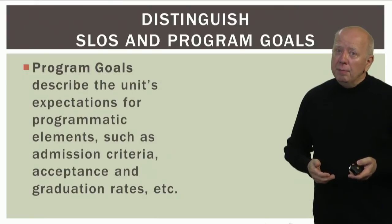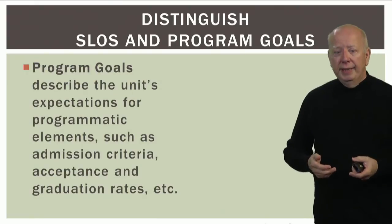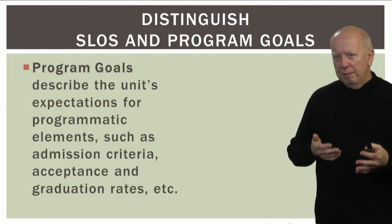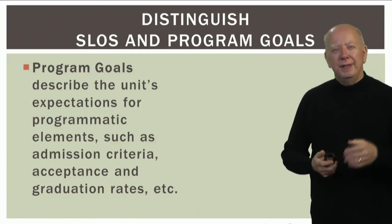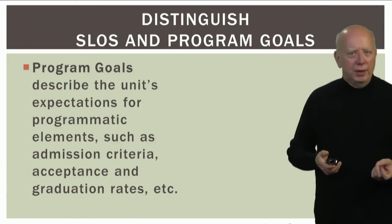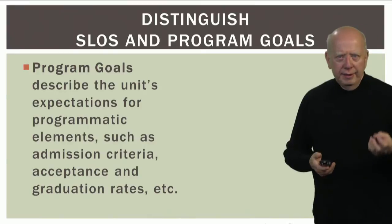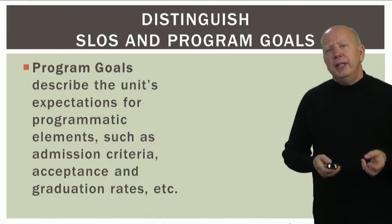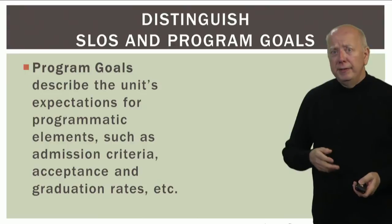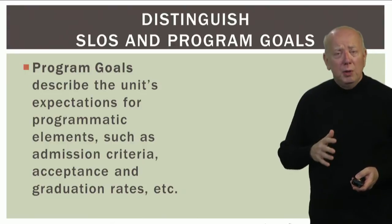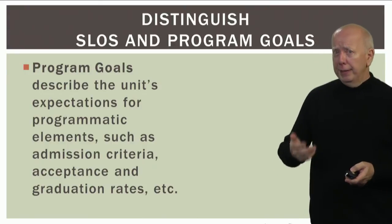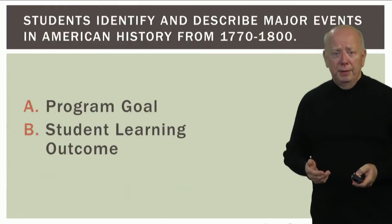A program goal, on the other hand, describes a program's programmatic expectations having to do with things like the acceptance rate, admission criteria, graduation rates, and attrition rates. Those kinds of things are also measured by programs, but they're not related to student learning outcomes — they're related to programmatic goals.